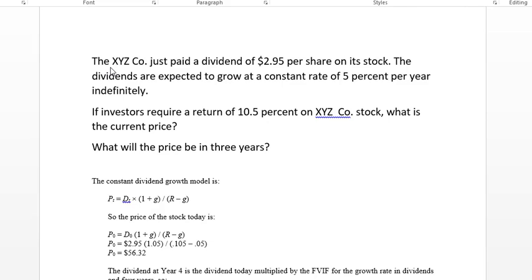The problem is that we have an XYZ company which just paid a dividend of $2.95 per share on its stock. The dividends are expected to grow at a constant rate of 5% per year indefinitely, that means forever. If an investor requires a 10.5% return on the stock, what would be the current price and what will the price be in three years?